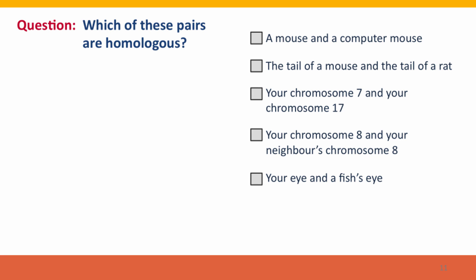Here's a question for you: which of these pairs of entities are homologous? One thing to note about this question is that the answer boxes are square. In Coursera, and in many other multiple-choice situations, square answer boxes have a special significance — they mean this is a question where there may be more than one correct answer, and that you will be able to check more than one box in your answers.